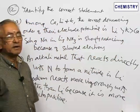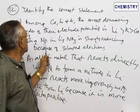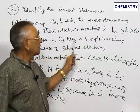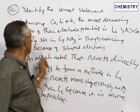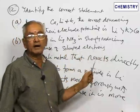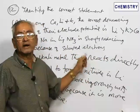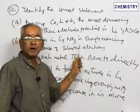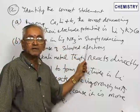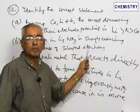Coming to the second statement: a solution of sodium in liquid ammonia is a very powerful reducing agent because of solvated electrons. Electrons get solvated by means of these solvents. Therefore, on account of the solvated electrons, this has got strong reducing property.